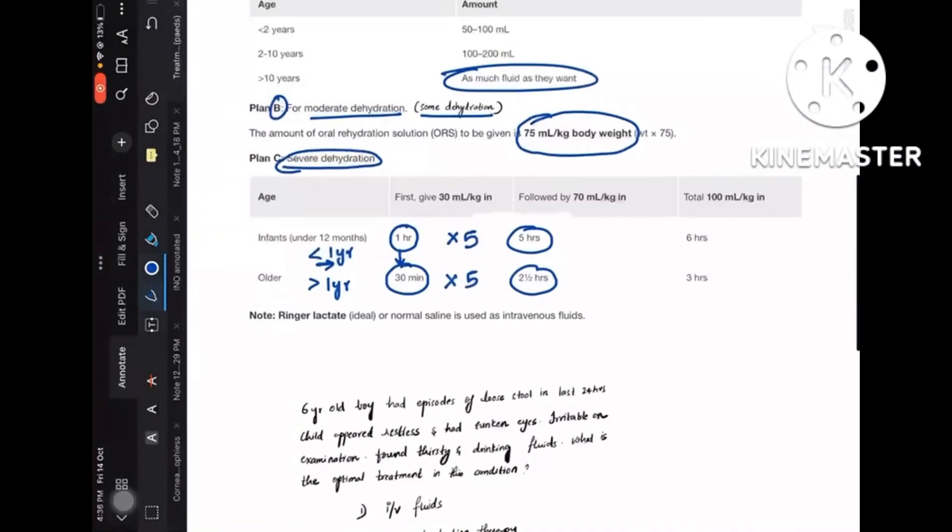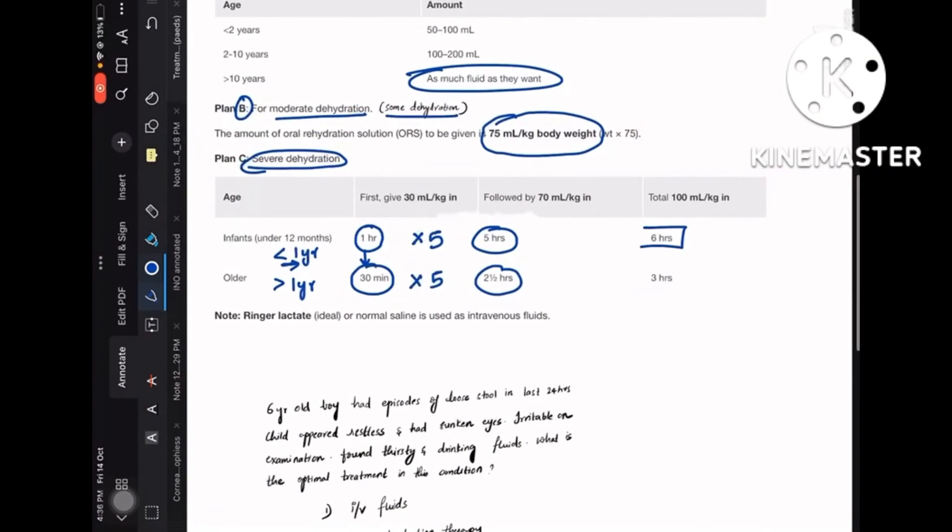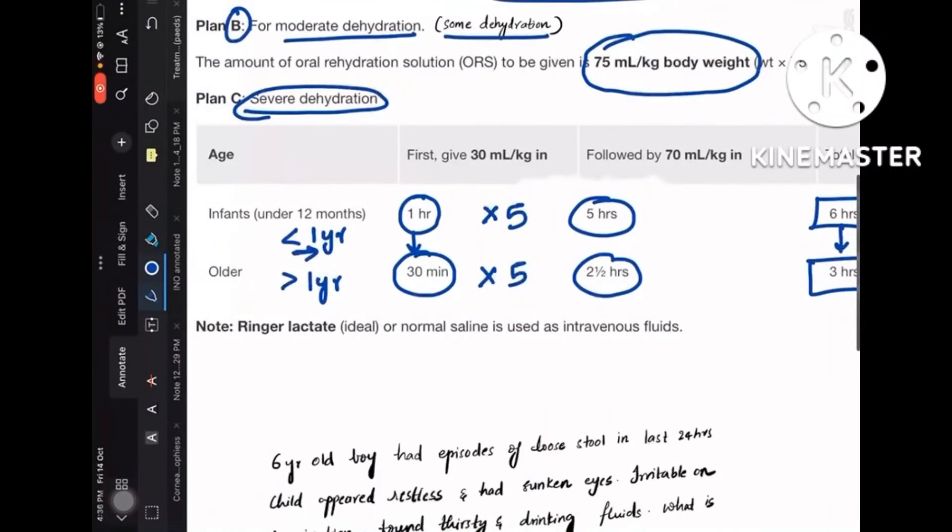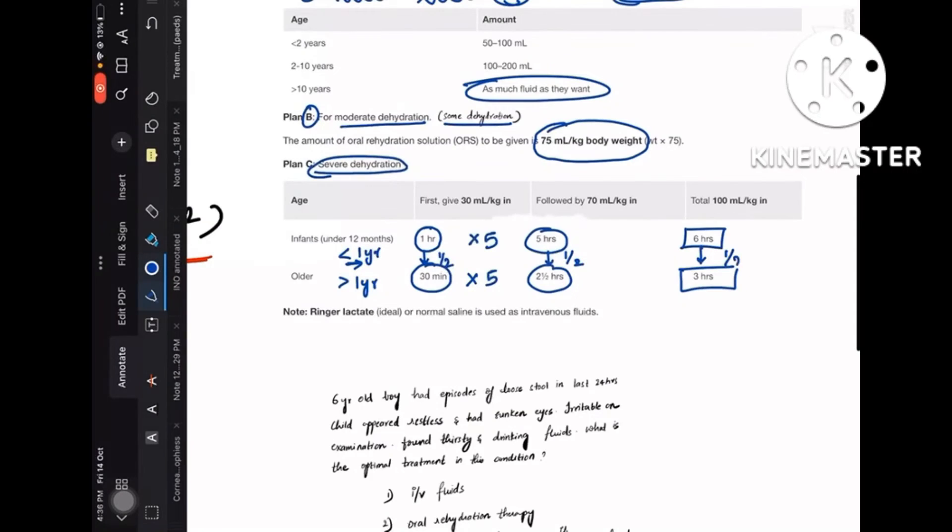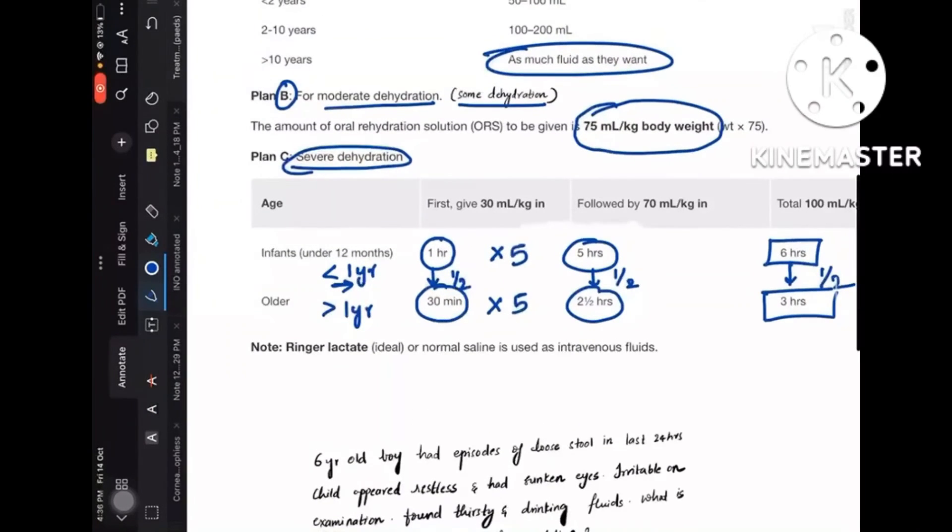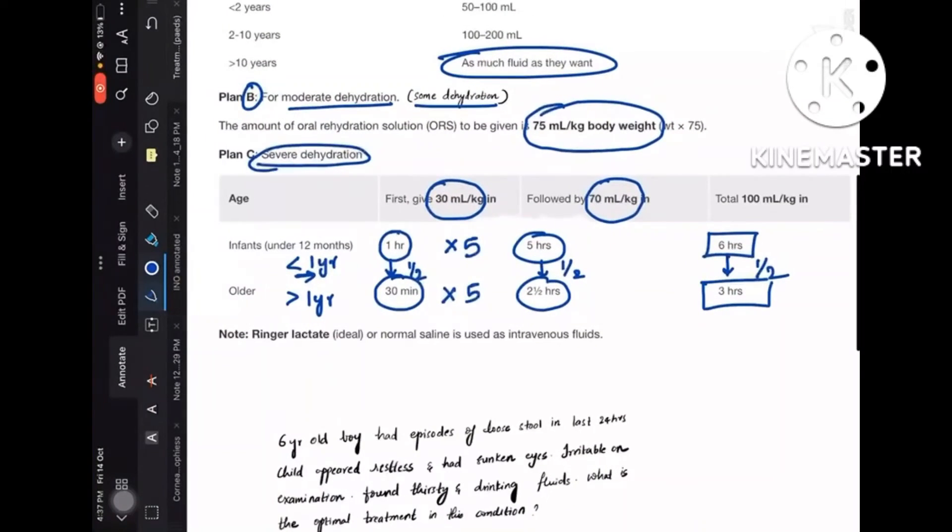And for the elderly, you have to halve it, which is 3 hours. So everything will be half. For 1 hour, 30 minutes is half. And from 5 hours, half is 2 and a half hours. And for 6 hours, half is 3 hours. So you give in the first 1 hour 30 ml per kg, and followed by 70 ml per kg in the next 5 hours in case of infants and next 2 and a half hours in case of elderly people. So total should be 100 ml per kg.